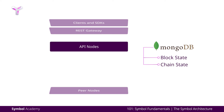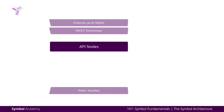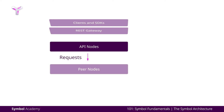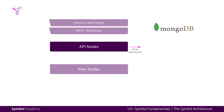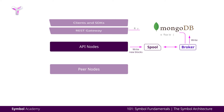The API nodes push new transactions to the peer-to-peer network for validation. After being validated and included in the block, API nodes write data to MongoDB. This is not done directly — it writes into a file-based queue called spool. A broker service will then update MongoDB accordingly and notify the REST gateway via 0MQ.